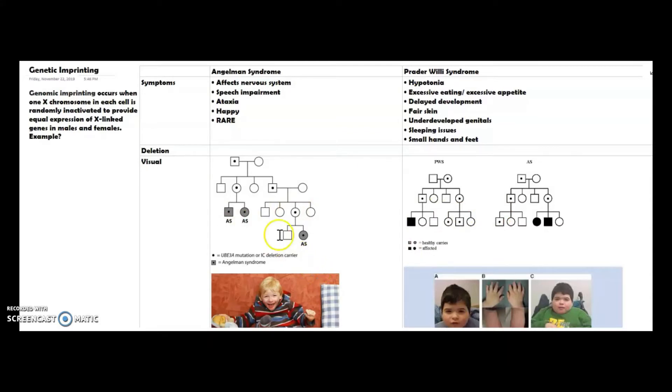For Angelman syndrome, this syndrome affects the nervous system. This syndrome is usually diagnosed at a young age because these symptoms are not easily identified, but they are present and you can see them in the phenotype of the child.